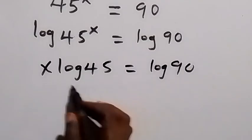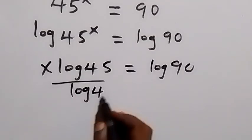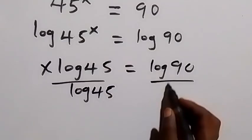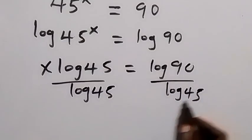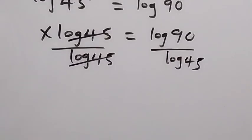Then from here we divide both sides by log 45. Log 45 cancels on the left side, and x remains there.